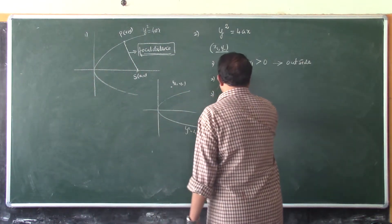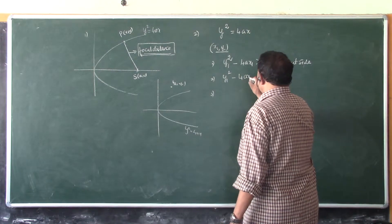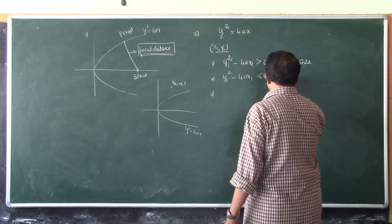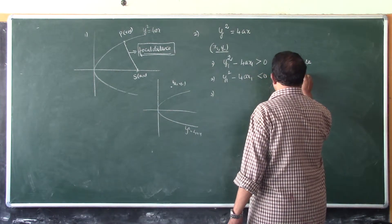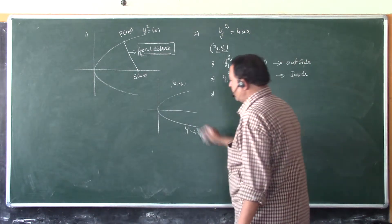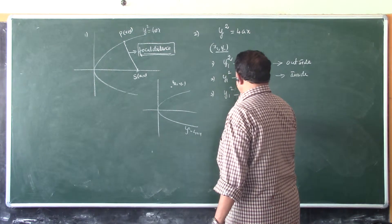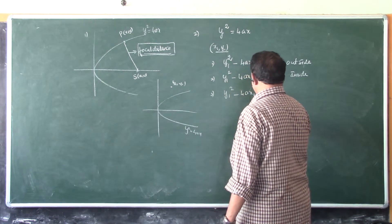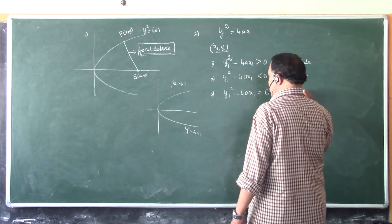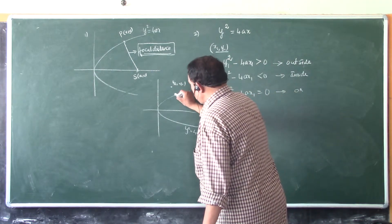If y1 square minus 4Ax1 is less than zero, then the conclusion is the point is inside the parabola. It will be somewhere here. And the third one is, if y1 square minus 4Ax1 is equal to zero, then the point lies on the parabola.